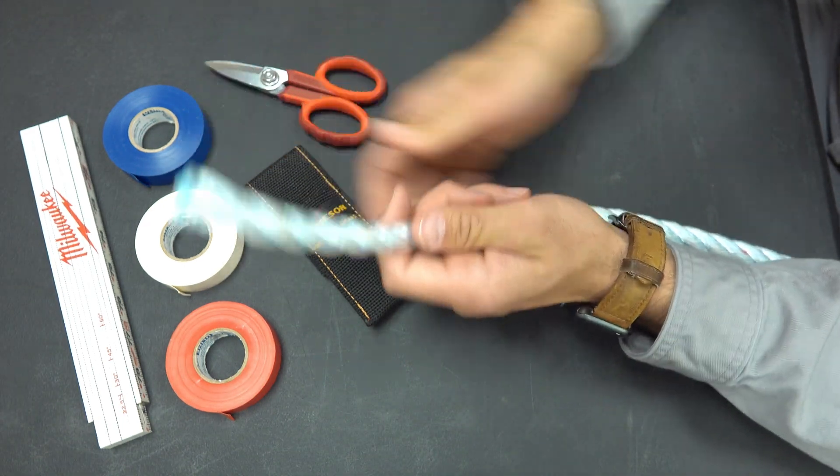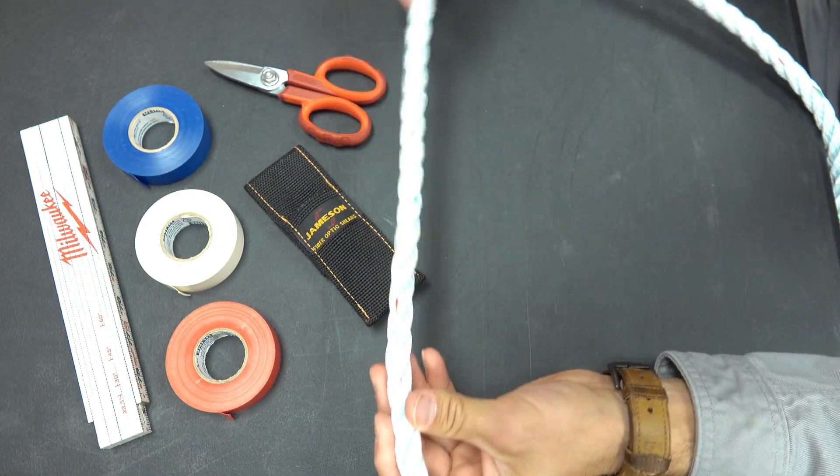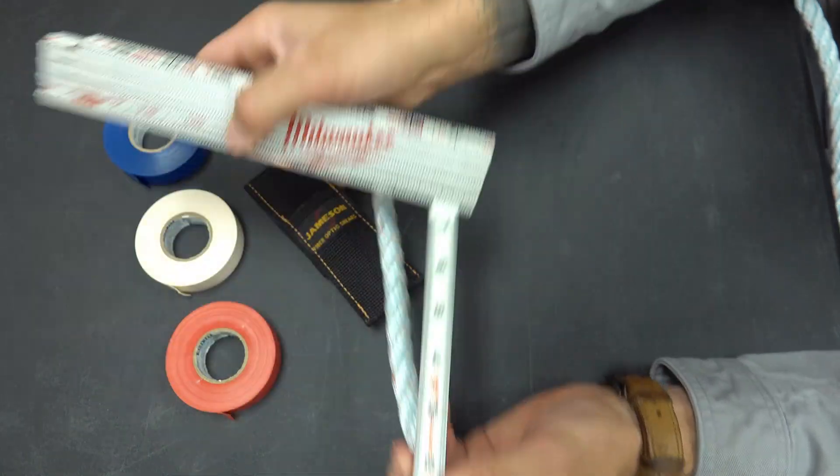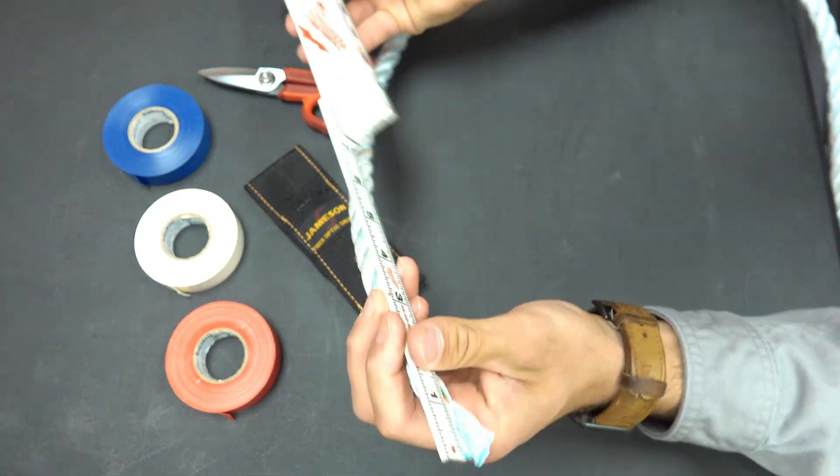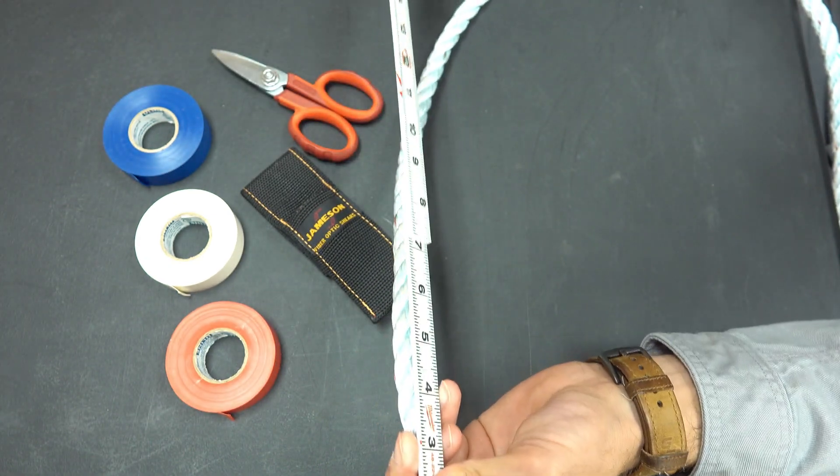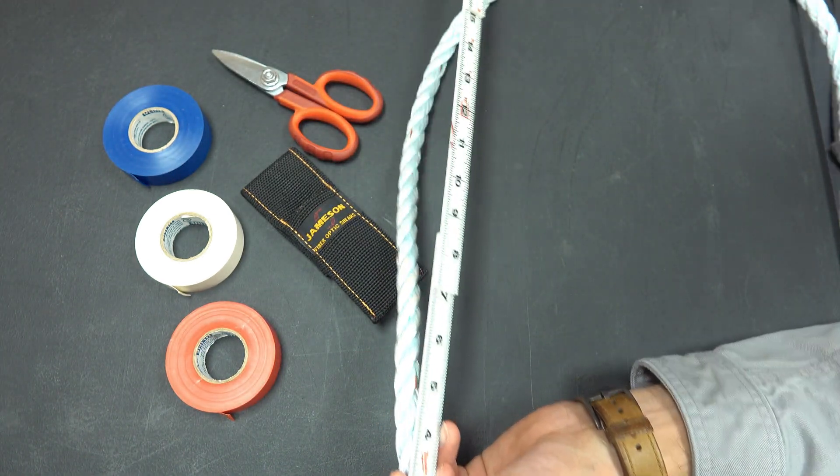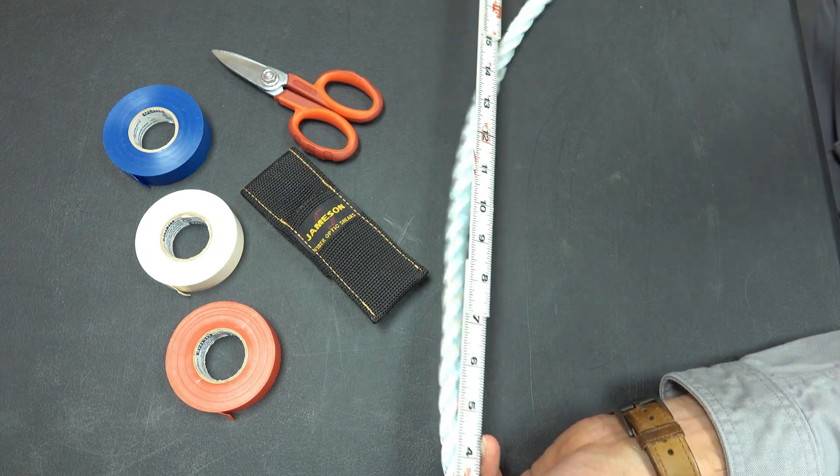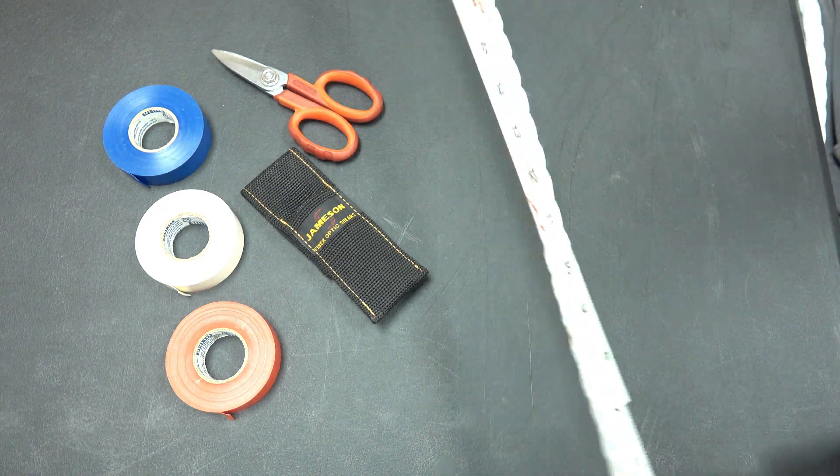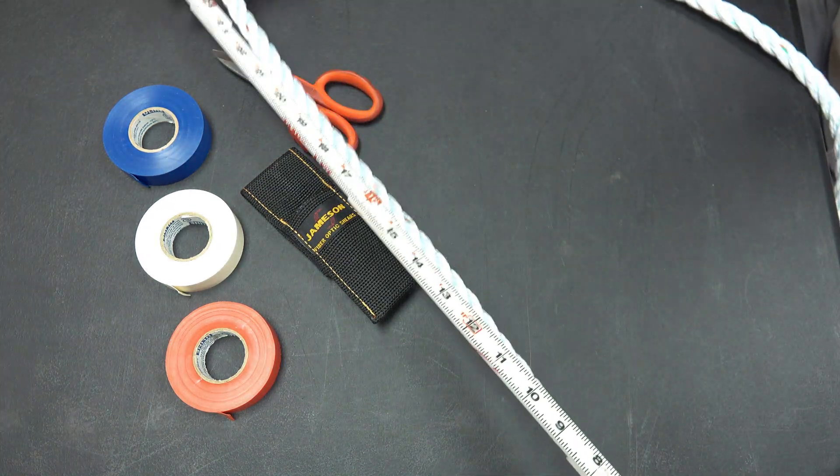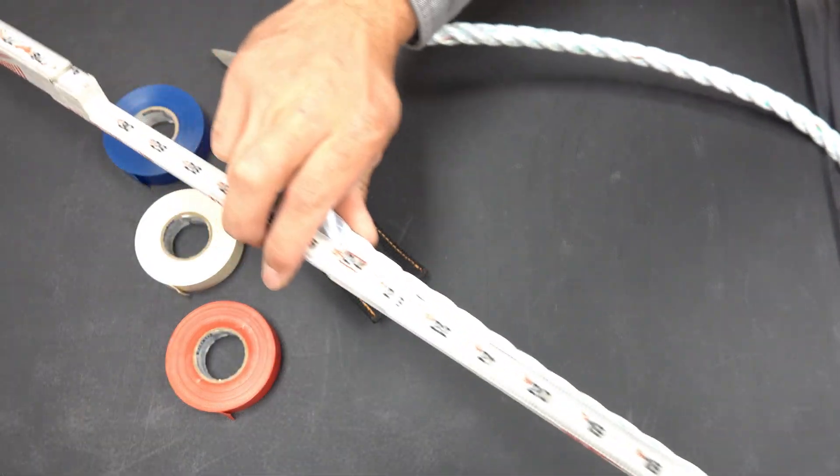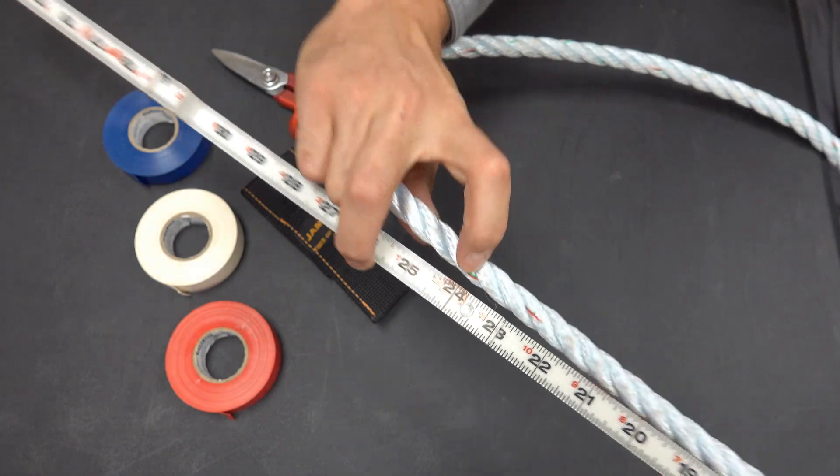We are going to then measure down two feet on our rope from the top. Two feet to ensure that we are going to have enough rope for our eye splice. Right there is the two foot mark.